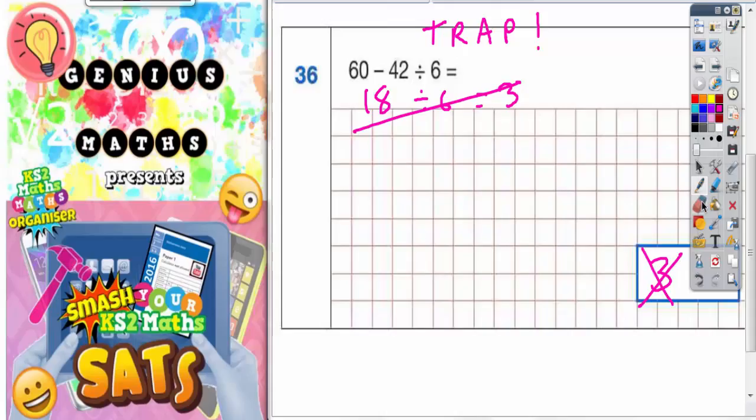3 is the incorrect answer because what we've got to do is remember our order of operations. We've done the subtract before the divide and you should not do subtraction before division because you should have learned about BODMAS. Now BODMAS helps you to decide which order of operations to do it in. So let's refresh our memories what BODMAS means.